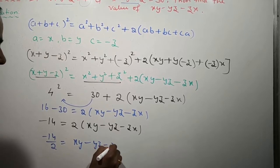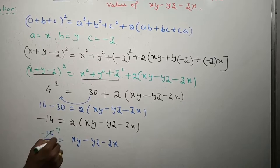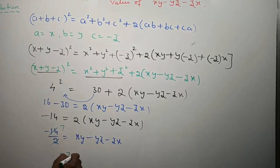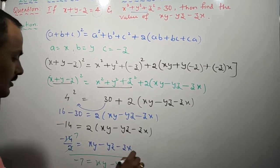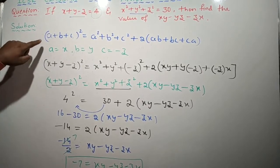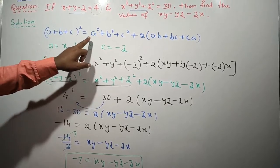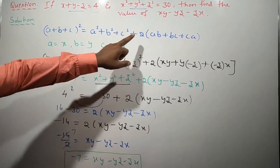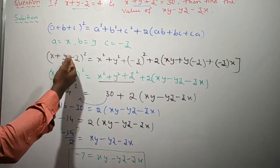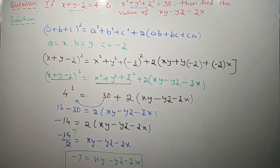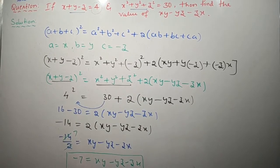2 sevens are 14, so minus 7 is the value of xy minus yz minus zx, children. Got the answer! You should practice. You must keep this identity in your mind: a plus b plus c whole squared equals a squared plus b squared plus c squared plus 2 of ab plus bc plus ca. This is very important. If any sign changes, you get one more similar identity. Don't worry — easy, children. Good luck.